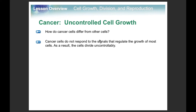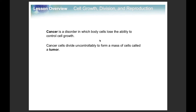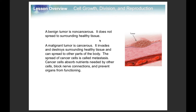Cancer cells are basically cells that are growing out of control — they don't respond to any signals from the regulators and just keep going. Not all cancer is life-threatening though. If you get a large mass, you have a tumor, but it can be benign or malignant. If the tumor is just sitting there, it's benign. If it's spreading and killing off good tissue, it's malignant, and that's more serious.